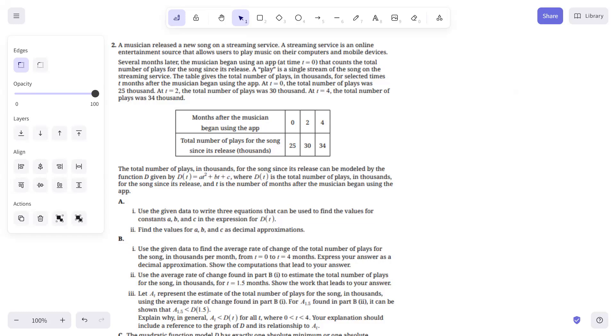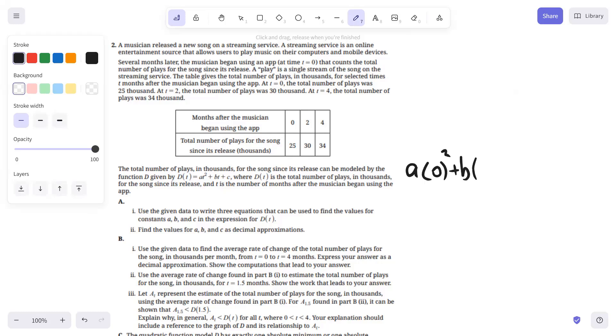So if you look at the first table values, it's 0 and 25. That means when you plug 0 into D, the answer should be 25. So we would have A times 0 squared plus B times 0 plus C equals 25. And then when you plug 2 in, you would have A times 2 squared plus B times 2 plus C equals 30. And then the third one, A times 4 squared plus B times 4 plus C equals 34.